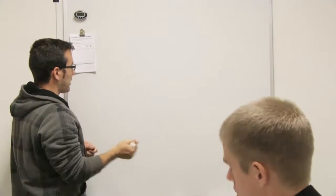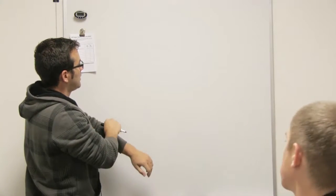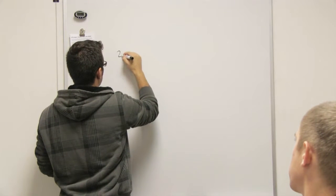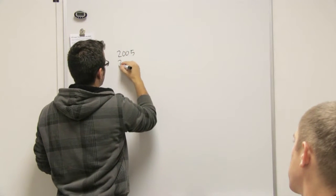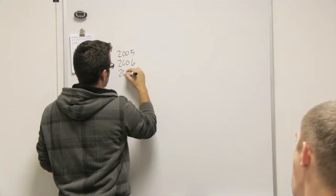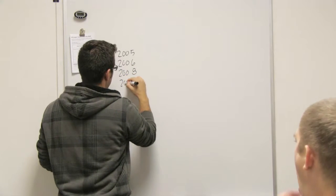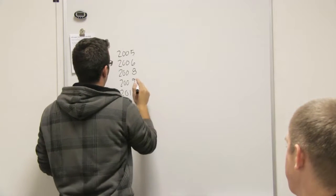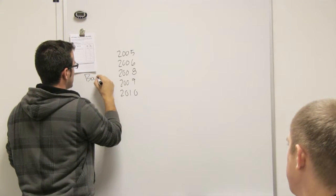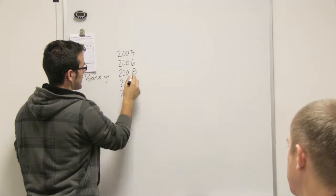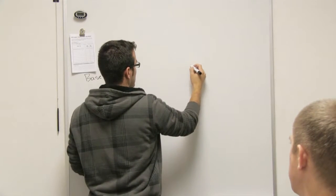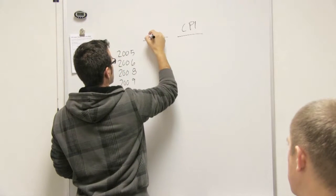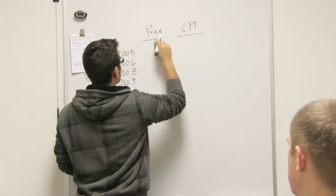A good way to understand this is if you have your base year - say if you have a list of prices over the years, right? So we'll start with 2005, then you have 2006, 2008, 2009, and 2010. Say if your base year is 2008, your CPI is...